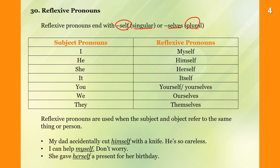Reflexive pronouns are used when the subject and object refer to the same thing or same person. For example: 'My dad accidentally cut himself with a knife — he is so careless.' And: 'I can help myself, don't worry' — the subject I and object myself refer to the same person.